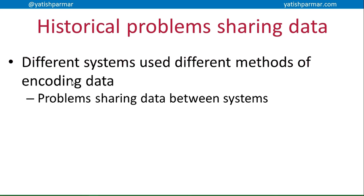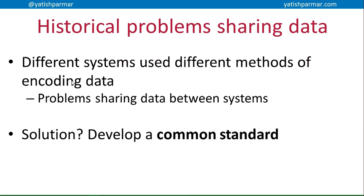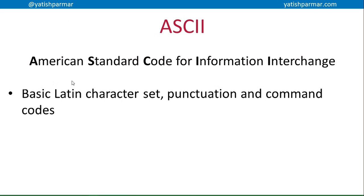So you had this huge problem — even sometimes computer systems from the same manufacturer had different methods of encoding data. The solution was to develop a common standard that everybody could understand, and that's basically where ASCII came in. ASCII stands for the American Standard Code for Information Interchange. They basically came up with a character set which contained basic Latin characters, punctuation, and command codes as well.